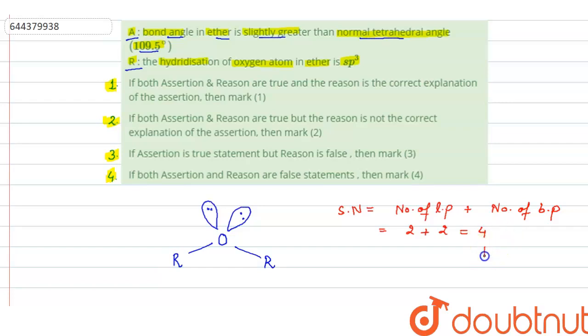So steric number is four. And four steric number means the hybridization will be sp3. So here oxygen is sp3 hybridized. Now for sp3 hybridized the geometry should be tetrahedral. So the geometry is tetrahedral.